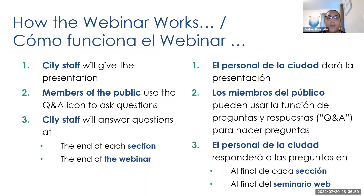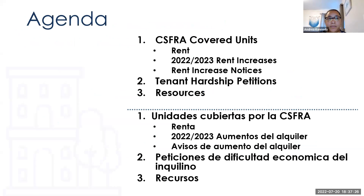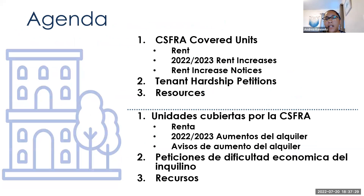A quick overview of how the webinar is going to work. I'll be giving the presentation, and then you, as members of the public, can use the Q&A icon to ask your questions, or if you prefer, you can raise your hand and we can have you speak that way. We'll be splitting the webinar up into a couple of chunks. We'll ask questions and open it up for Q&A at the end of each section, and then again at the end of the webinar. Tonight we're going to cover which units are covered by the CSFRA, what rent increases are allowed, what type of notices are required, tenant hardship petitions, and resources.